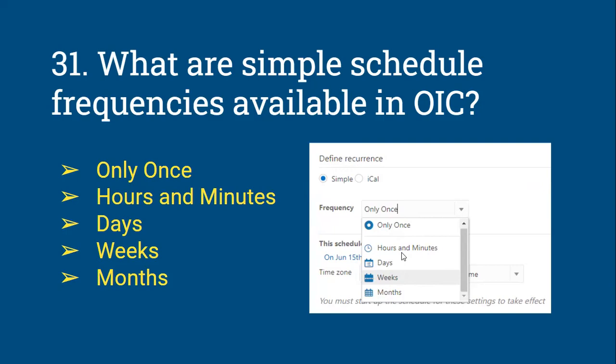For example, if you select Hours and Minutes, it gives you dropdowns to select hours and minutes separately. If you select Days, it gives you a dropdown to select the number of days. With a combination of all five frequency options, you can schedule an integration.